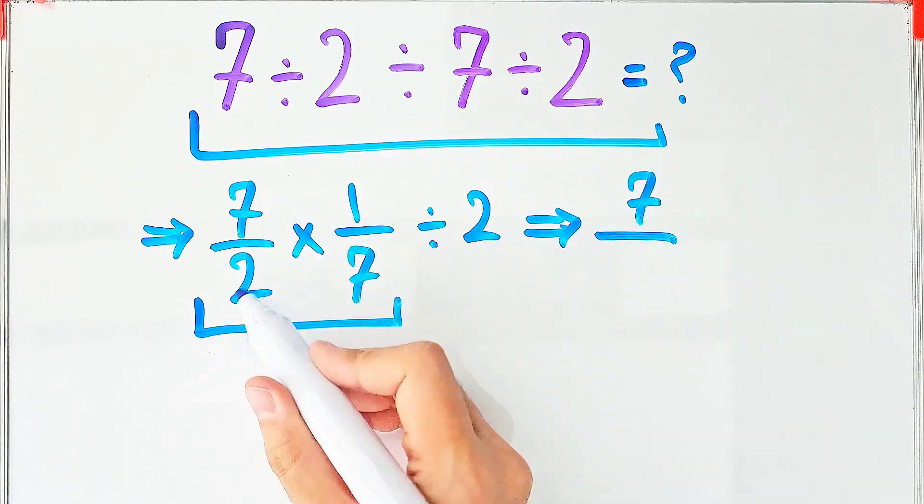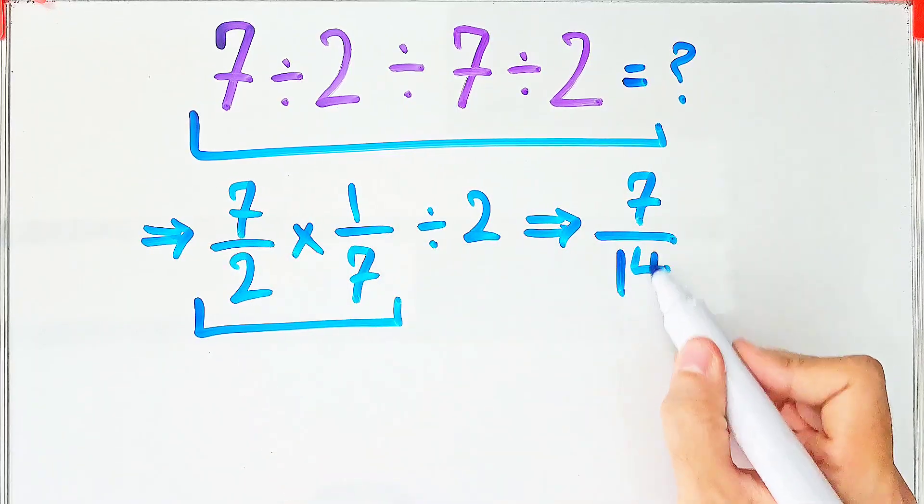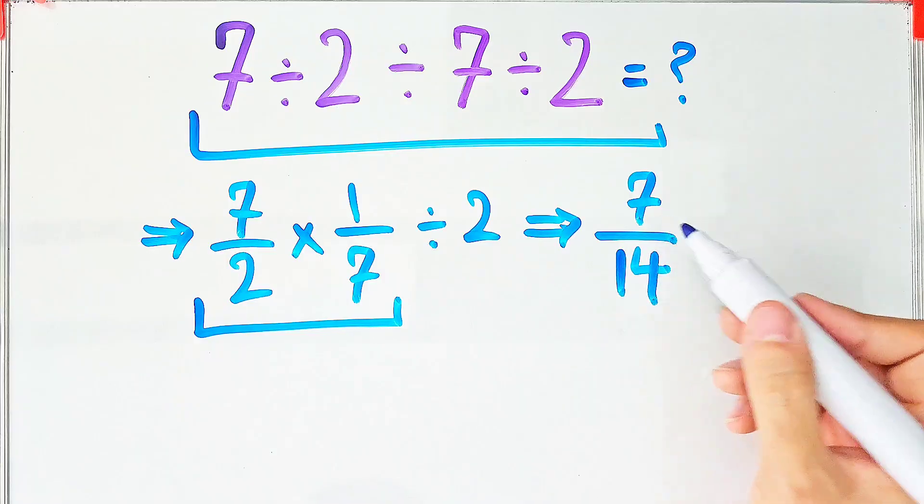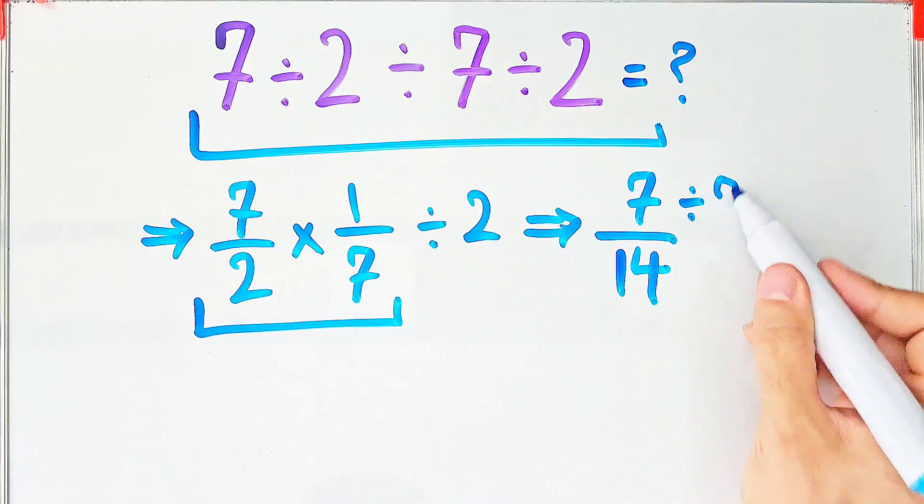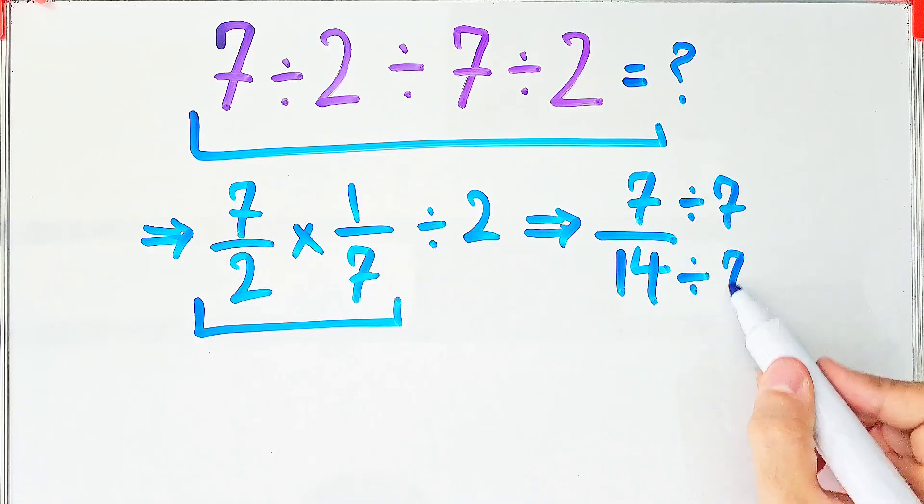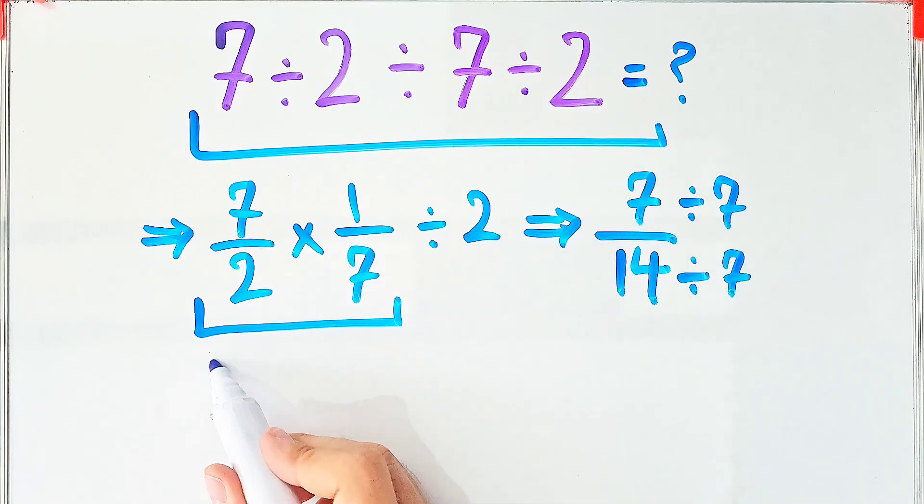We have 7 over 14. Because the numerator and denominator of this fraction are divisible by 7, we divide both by 7. 7 divided by 7 equals 1, and 14 divided by 7 equals 2.